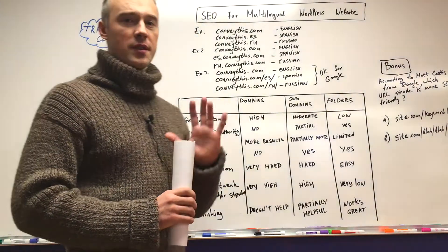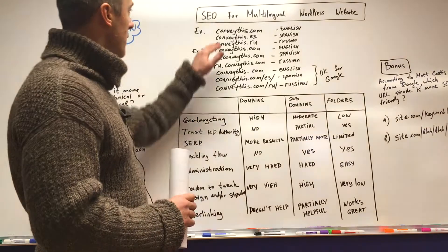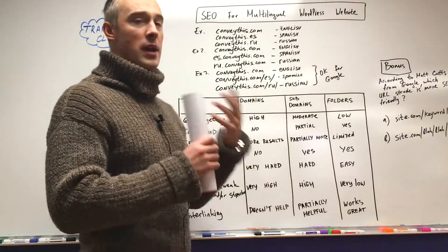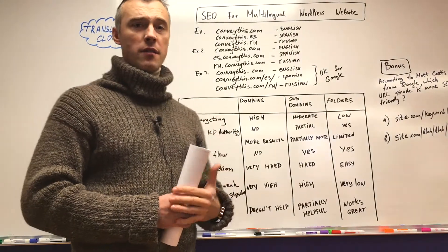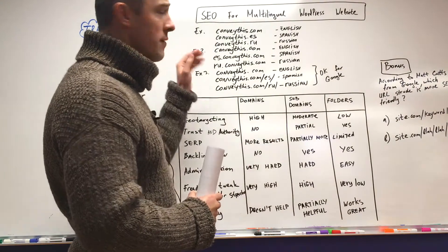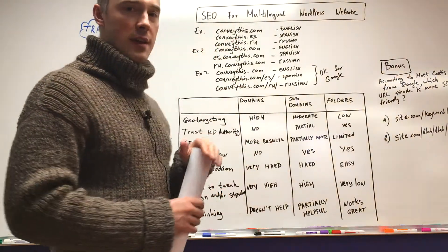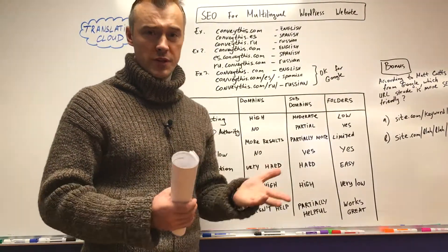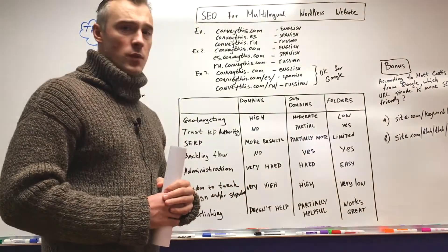Example number one: if you buy different domain names — for example you had conveythis.com in English and you would like to make a foreign version in Spanish and a foreign version in Russian — you buy a different domain: conveythis.es for Spanish and conveythis.ru for Russian.